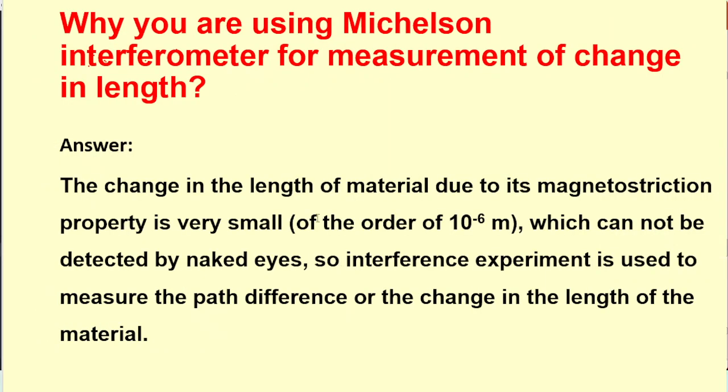Why are you using Michelson interferometer for measurement of change in length? Because the change in length of the material due to its magnetostriction property is very small, it is of order of 10^-6 meters, which cannot be measured or detected by naked eyes. So interference experiment is used to measure the path difference or the change in the length of the material.